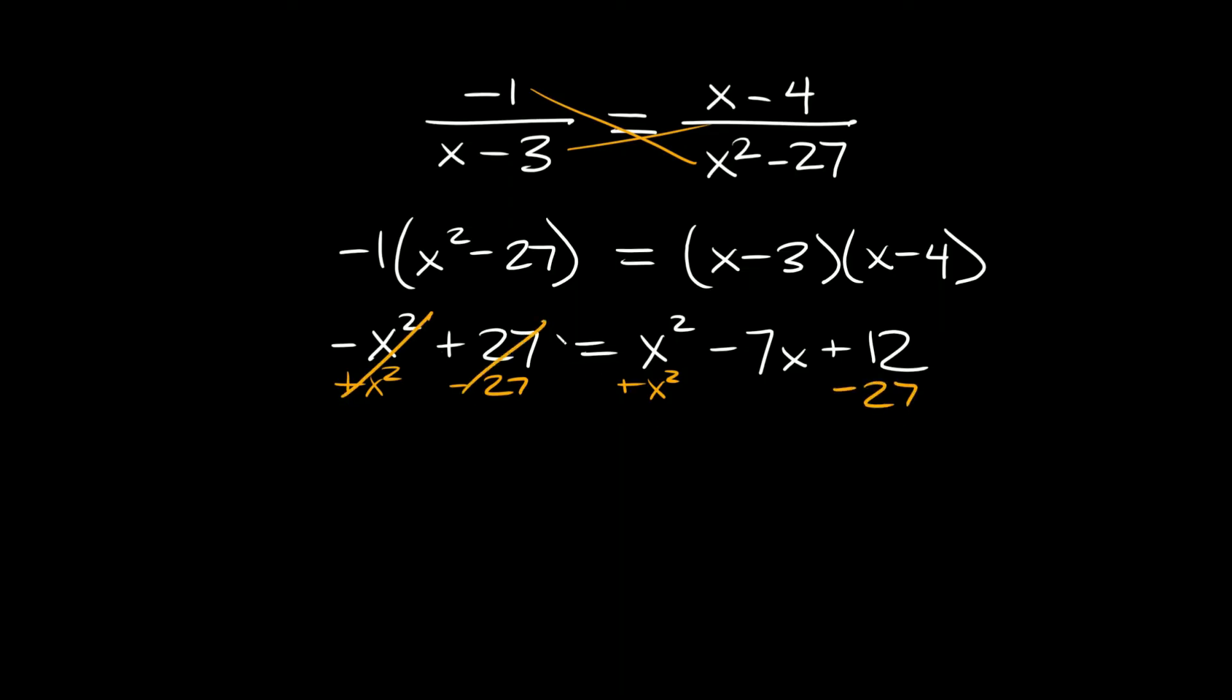Those cancel out, so we just get zero over here, and that equals x squared plus x squared, which is 2x squared minus 7x minus 15.